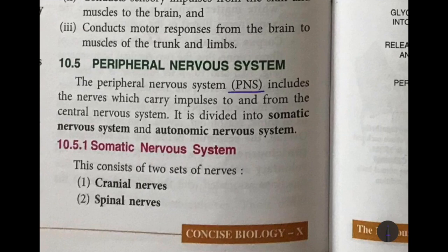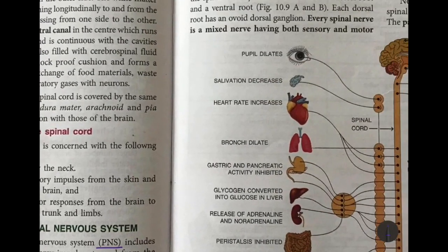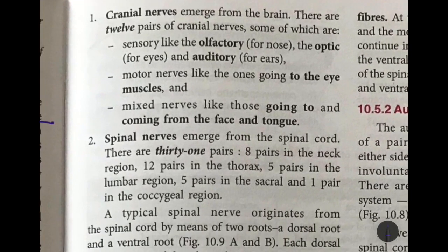Next we move on to the peripheral nervous system, also abbreviated as PNS. It includes the nerves which carry impulses to and from the central nervous system — that is, the brain and the spinal cord. The peripheral nervous system is divided into the somatic nervous system and the autonomic nervous system. The somatic nervous system has two sets of nerves: cranial nerves, coming from the brain, and spinal nerves, from the spinal cord.